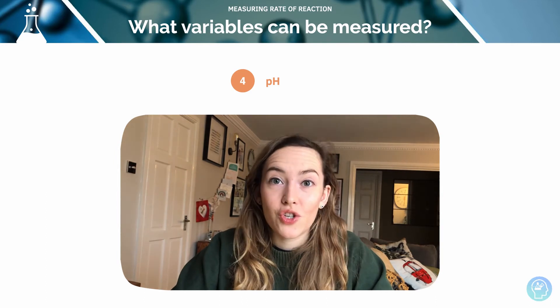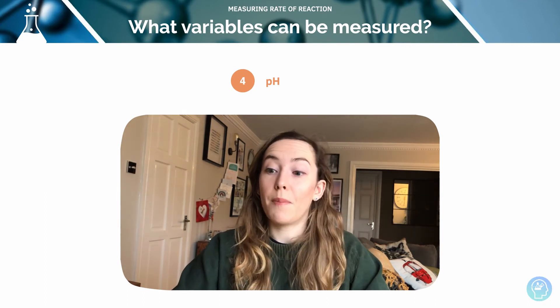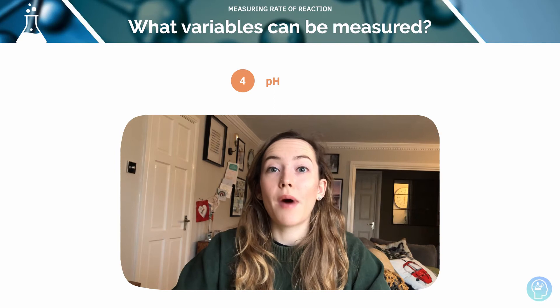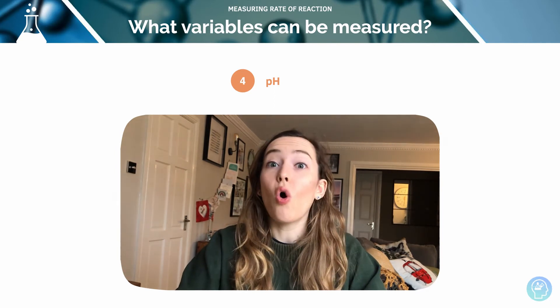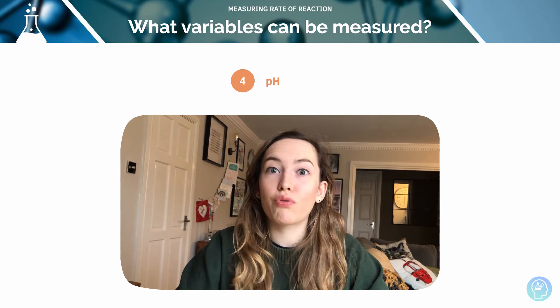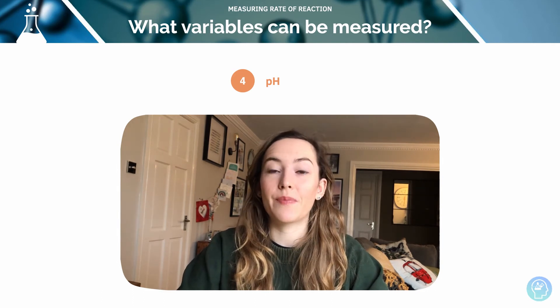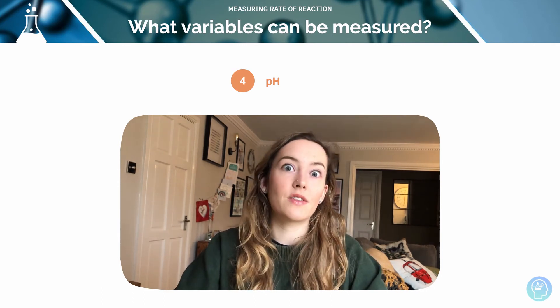We can measure the pH. We could take pH readings at set times by using an indicator, for example litmus paper, all sorts of things, or we could use a pH probe and that would give us a digital reading and we can take set recordings at time intervals.